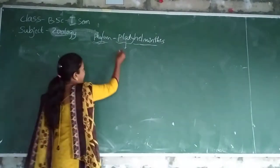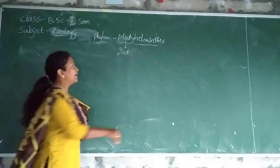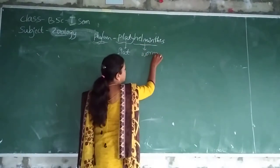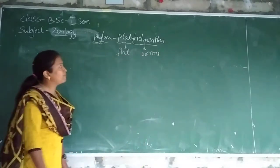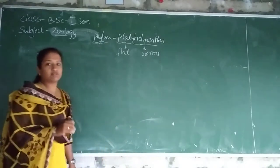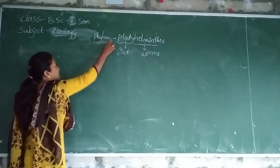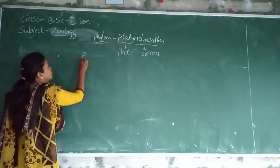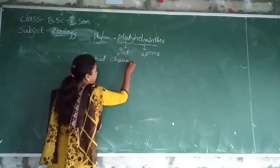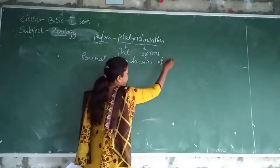In a Greek word, 'platic' is nothing but flat, and 'elemntis' is nothing but walls. So the meaning of platic elemntis is nothing but flat walls. We have to say that platy elemntis. First, you need to understand the general characteristics of platy elemntis.